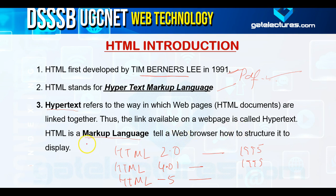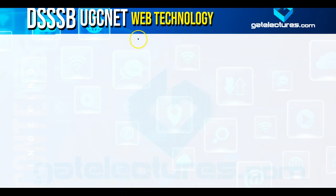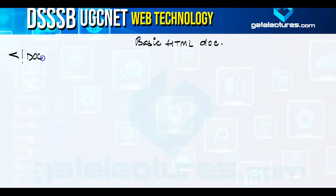We have different versions of HTML. HTML 2.0 was used in 1995, then HTML 4.01 came, and currently we are using HTML version 5. Now let's discuss the basic HTML document tags.